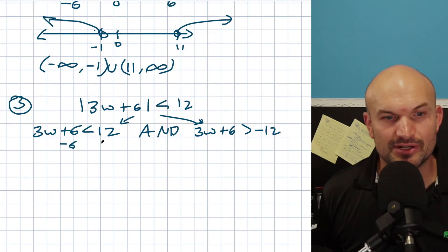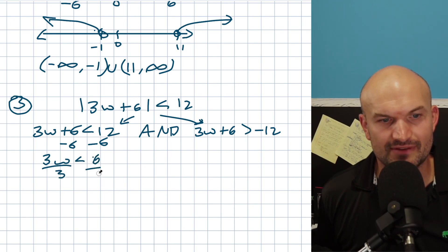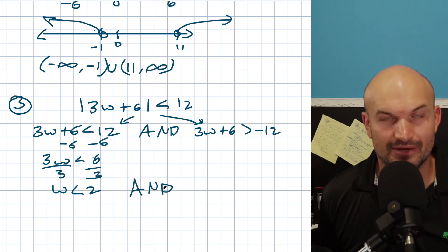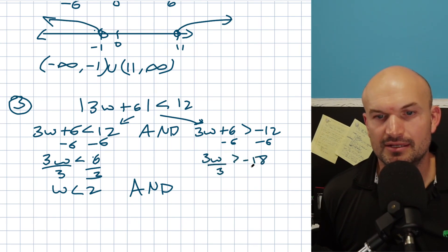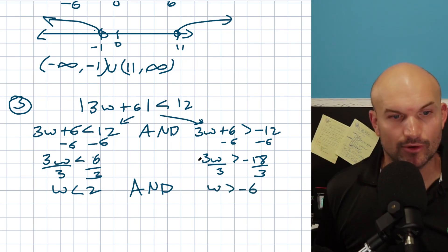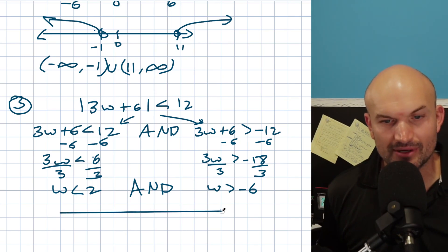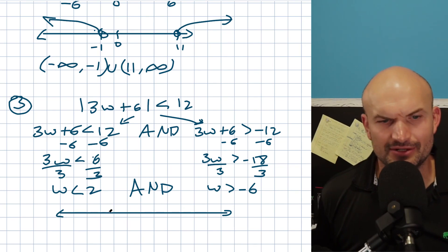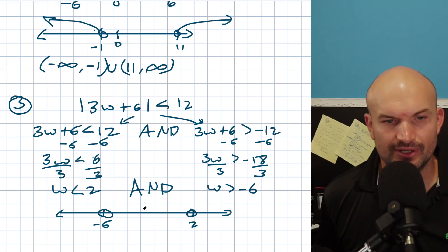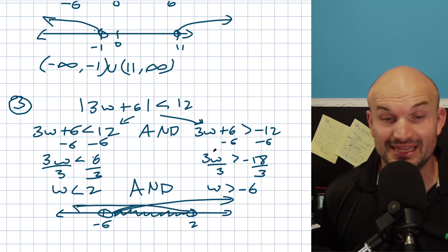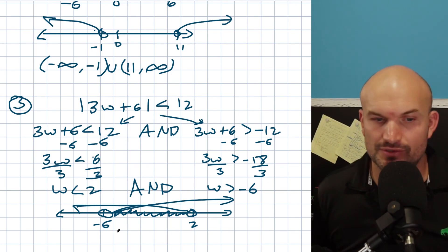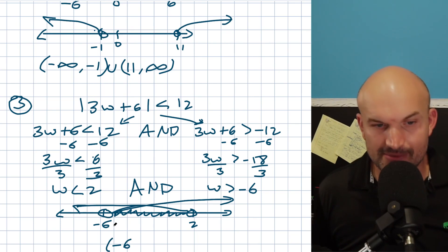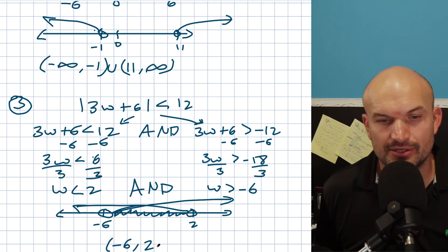Now back to example 3. I have 3w plus 6 less than 12 AND 3w plus 6 greater than negative 12. Subtracting 6 from both sides: 3w is less than 6, divide by 3, so w is less than 2. AND: 3w is greater than negative 18, divide by 3, so w is greater than negative 6. For the graph, anything greater than negative 6 goes to the right, and anything less than 2 goes to the left, so the intersection is between negative 6 and 2 — that's where both are true. In interval notation: open parenthesis at negative 6, to 2 with a parenthesis, giving us the interval negative 6 to 2.